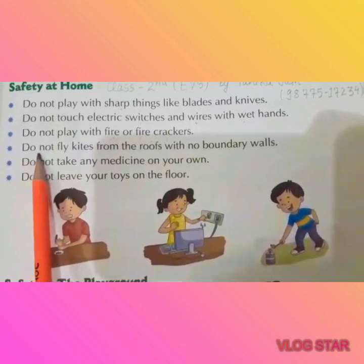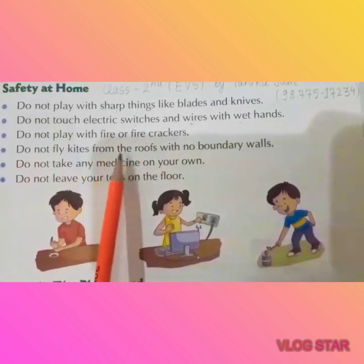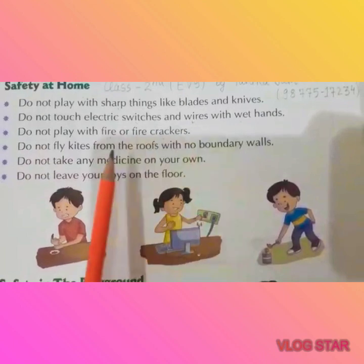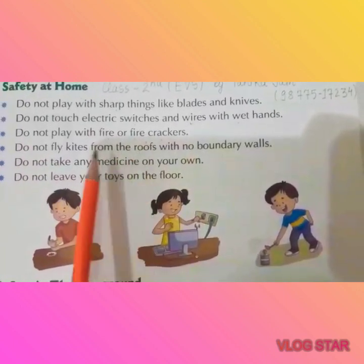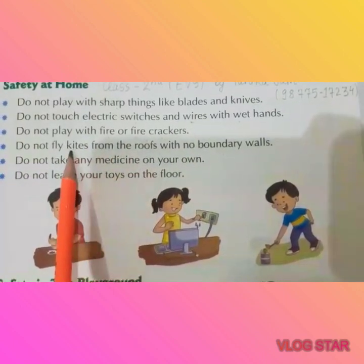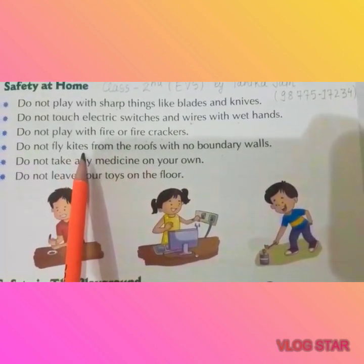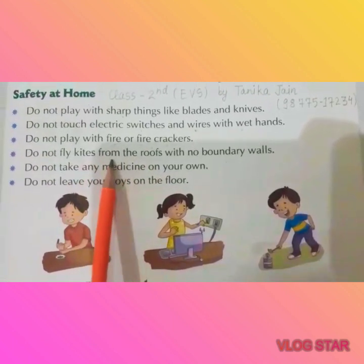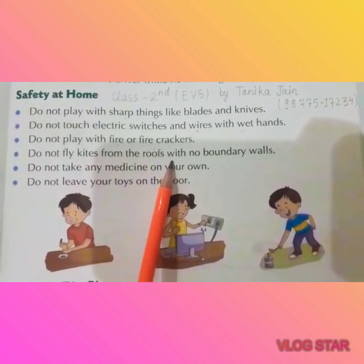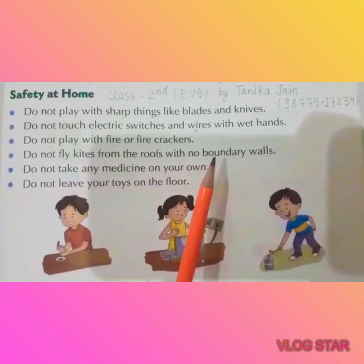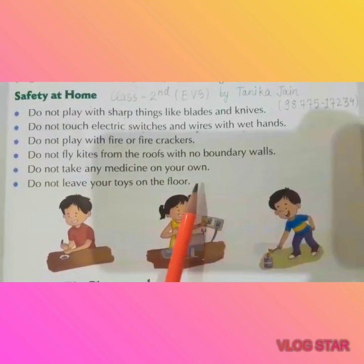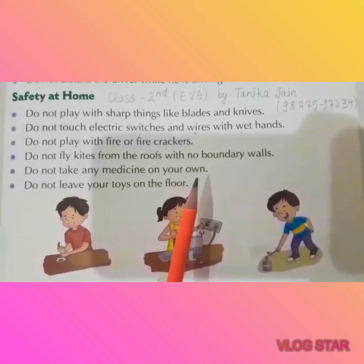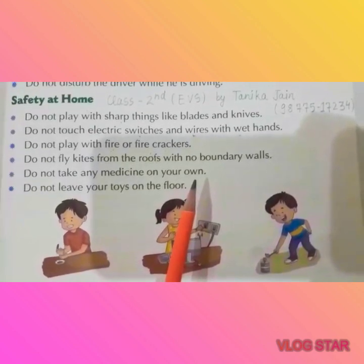The fourth point is: do not fly kites from the roof if there are no boundary walls. Sometimes we feel it is fun to fly a kite from the roof, but do not fly kites in places where boundary walls are not made, because you could fall from the roof. So we should always be careful about this.